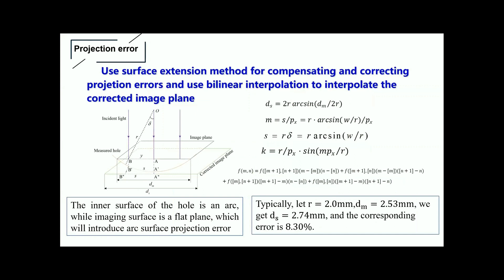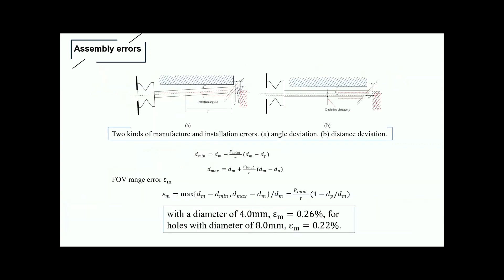Next, I will talk about errors. The inner surface of the hole is an arc, while the imaging surface is a flat plane, which will introduce surface projection error. We use a surface extension method for compensating and correcting projection errors and use bilinear interpolation to integrate the images. In addition, there are two kinds of manufacturing and installation errors, including angle deviation